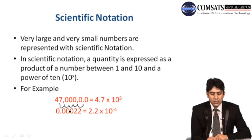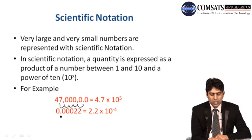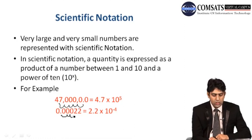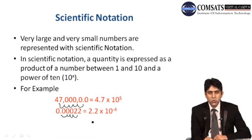If you have a decimal number like 0.00022 and want to express it in scientific notation, you move the decimal to the right until you have a single digit between 1 and 10. Moving four times gives 2.2, and because you moved to the right, the power of 10 is negative: 2.2 × 10⁻⁴.